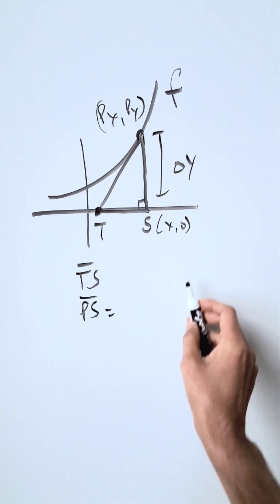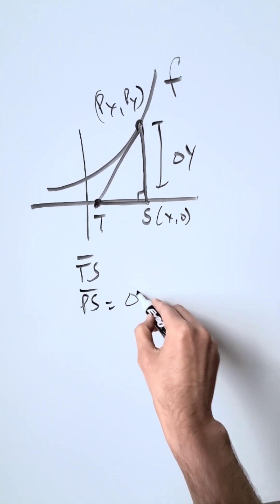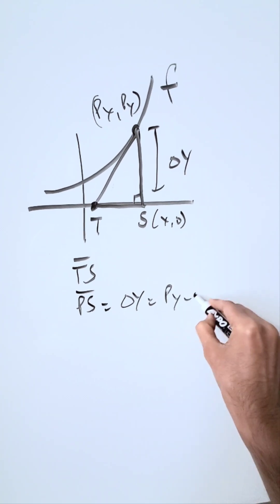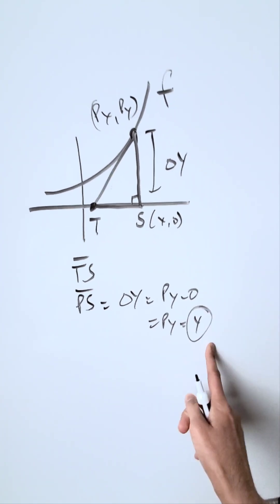My delta y over here is going to be equal to my ps. It's going to be py minus 0, which is just py. And you can just label that as y. That's all what it is.